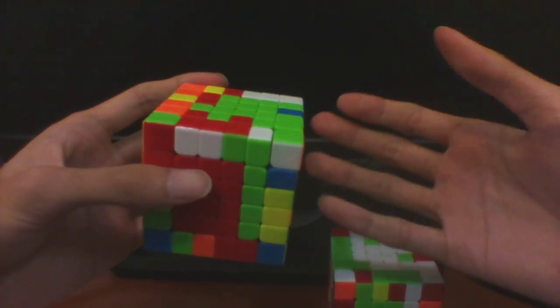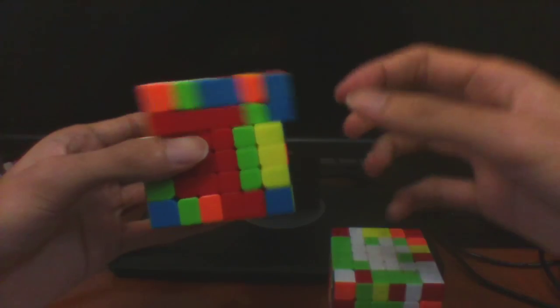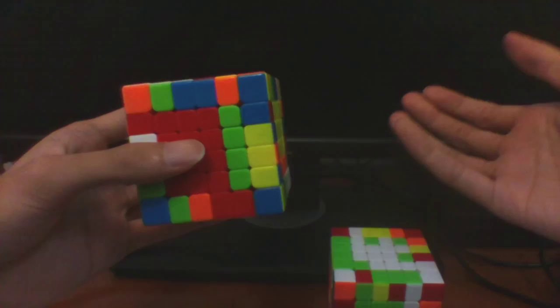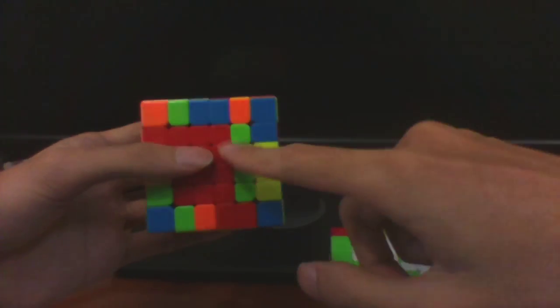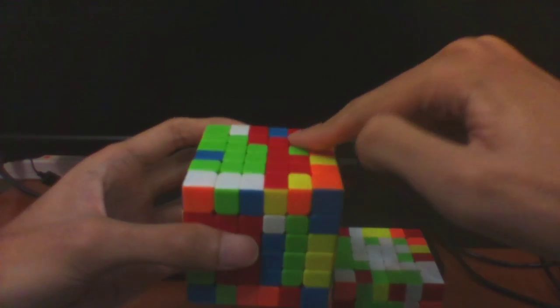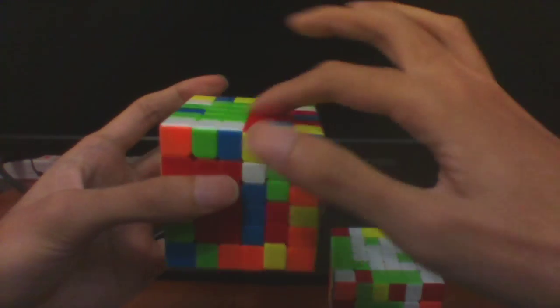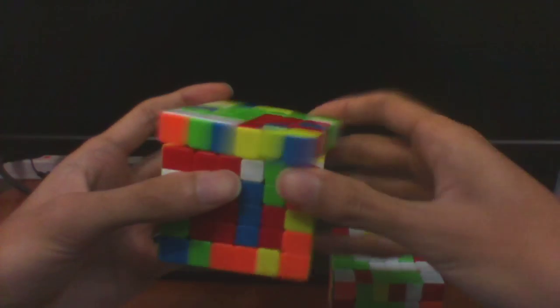A better solution here would be to use some kind of block building. So we bring out this slice, then we have this 3x1, this 3x1 and this 2x1 here. So join up the 3x1s and join the 2x1 and we're done.